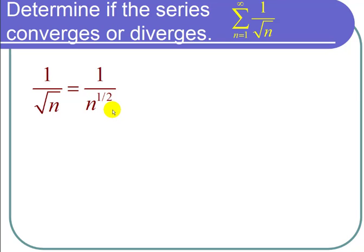For a p-series test, we first identify p, which is the power of n on the bottom. In this case, p equals 1/2.